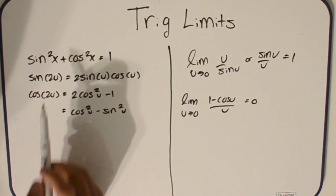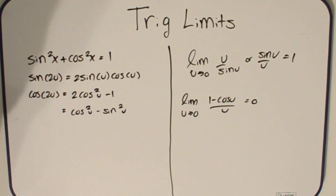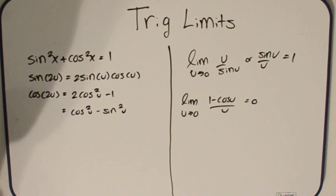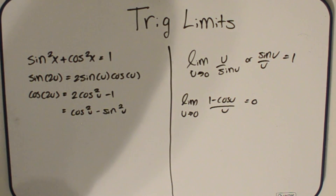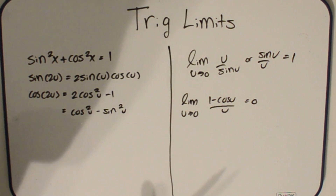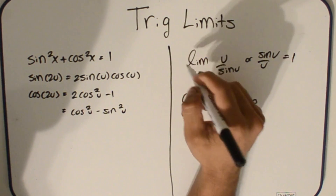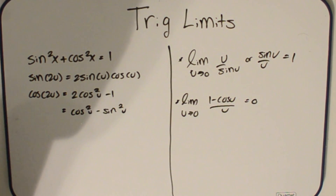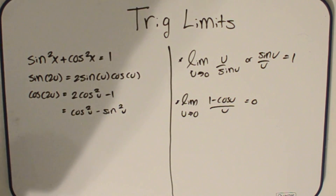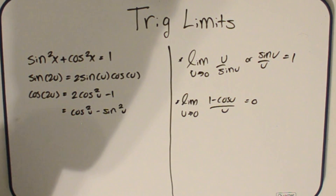To begin with: sine squared plus cosine squared equals 1; sine of 2u equals 2 sine u times cosine u; and cosine 2u equals 2 cosine squared minus 1, or cosine squared u minus sine squared u. Other than these, the two most important facts are: the limit of sine u over u as u approaches 0 equals 1, and the limit of 1 minus cosine u over u as u approaches 0 equals 0.